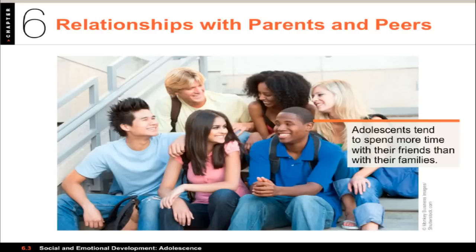Friendship is very important to teenagers; they often have one or two best friends and a few good friends. Friendship in adolescence differs from friendship in childhood: teens stress acceptance, openness, and mutual understanding with their companions. They usually have friends of the same gender and race, who are often similar in their attitudes, grades, and educational goals. Research supports the idea that birds of a feather flock together — people are attracted to those who share their worldview and validate the same things.